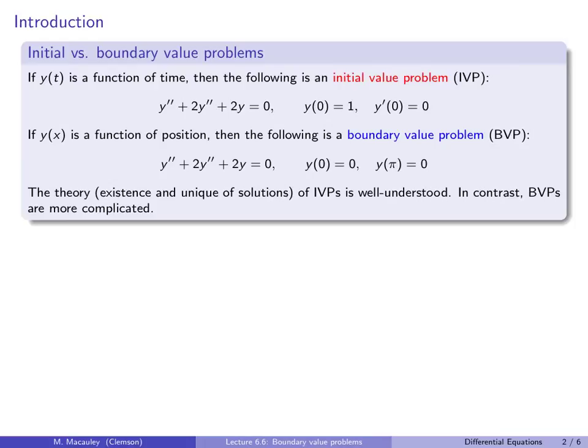If y(t) is a function of time, here's an example initial value problem. This might be harmonic motion as a function of time. This says that initially the position is 1 and the rate of change is 0.